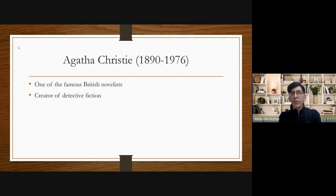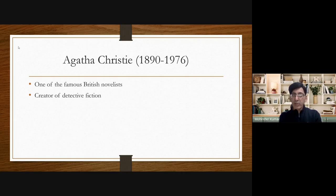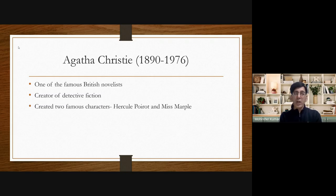In detective fiction, a crime is committed and that crime often involves a murder. Then a detective — also known as a spy, or in Hindi called 'jasoos' — tries to find out the real criminal. That type of novel, short story, or literature is called a detective novel. She has written detective novels and short stories and has created two world-famous characters.